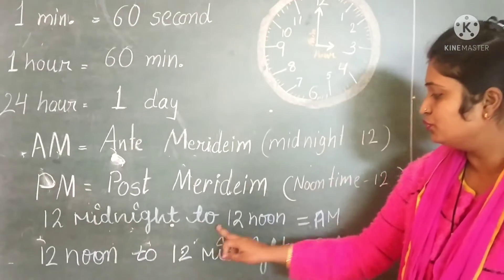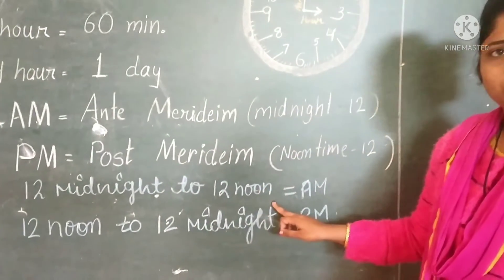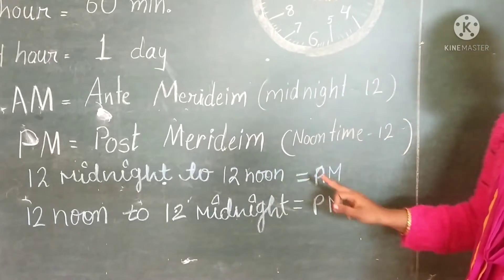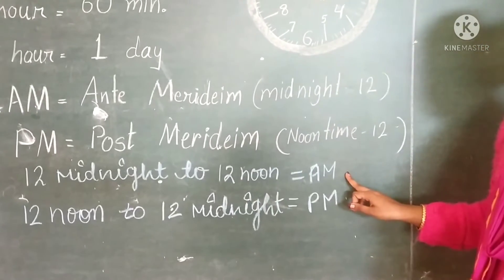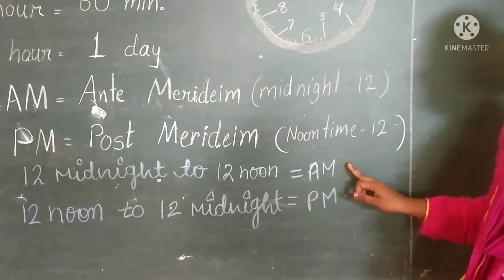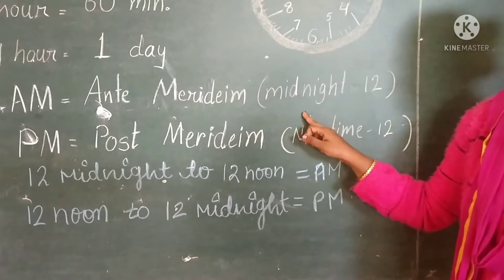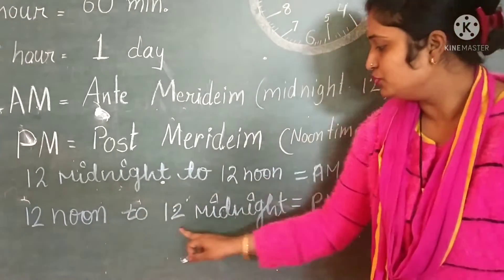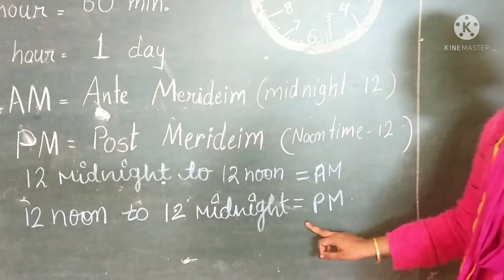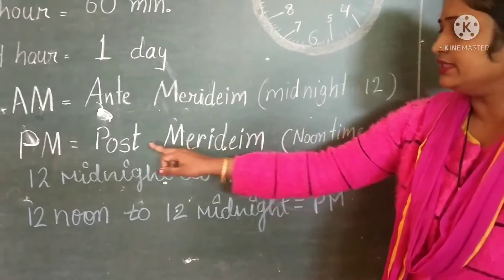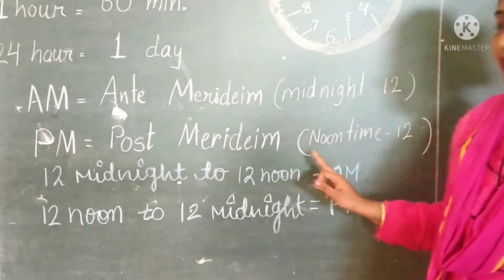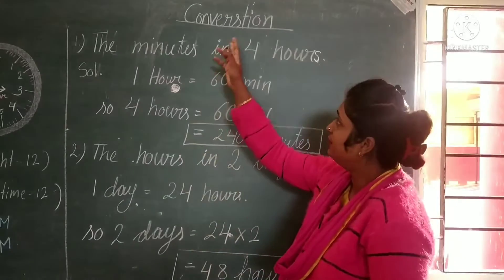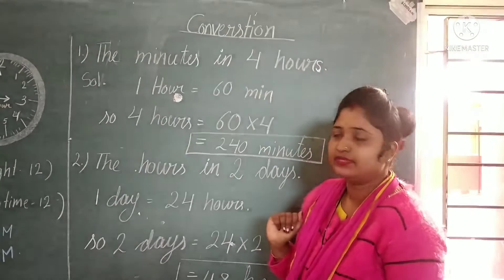12 midnight to 12 noon is AM, which is anti-meridian. And 12 noon to 12 midnight is PM, which is post-meridian. Next topic is conversion.